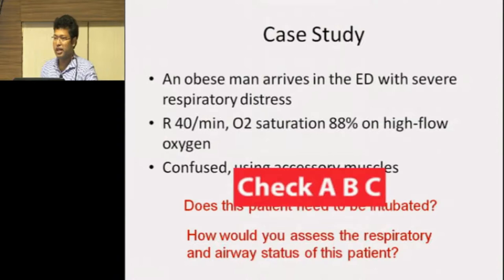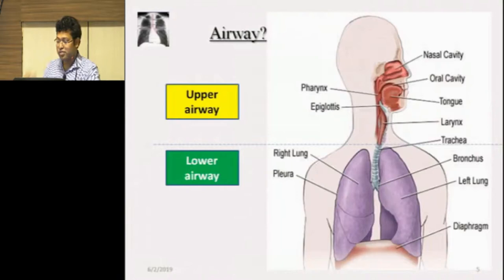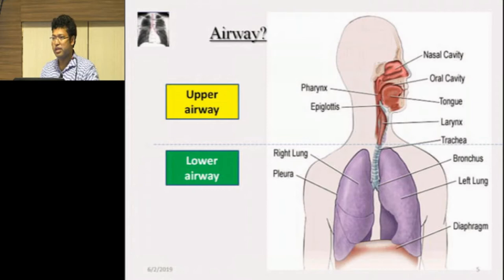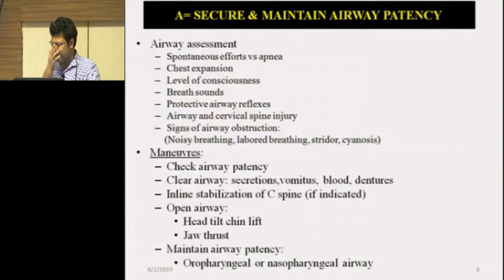We go by the A-B-C-D-E protocol. Looking at the airway first, there is a division into upper and lower airway. The upper airway starts from the nasal nares up to the cricoid cartilage. Below that is the trachea and the lower airway, which consists of the tracheobronchial tree ending in the alveoli.